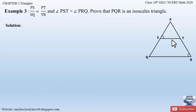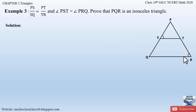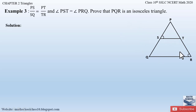Example Number 3 from Chapter 2: Triangles gives us a triangle PQR. We are given that PS/SQ is equal to PT/TR, and angle PST is equal to angle PRQ. We have to prove that triangle PQR is an isosceles triangle. An isosceles triangle is a triangle which has any two sides equal, so we need to prove that any two sides of this triangle are equal.